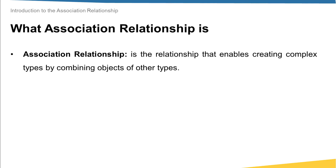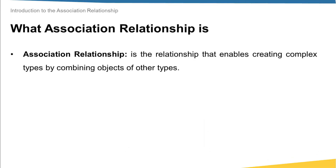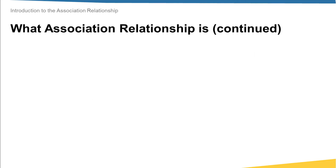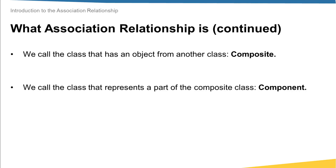Usually we describe this relationship by the word 'has.' So assume you have two classes A and B. When we have an association relationship between A and B, we say A has B. In this relationship context, we call the class that has an object from another class the composite, whereas we call the class that represents a part of the composite class the component.